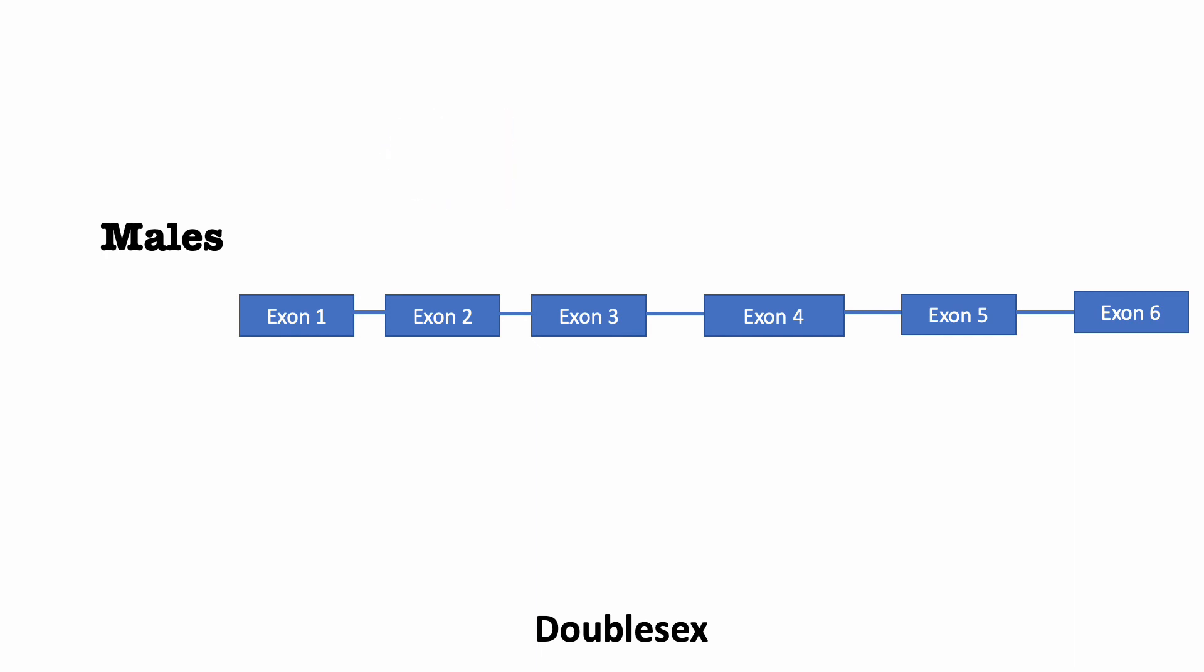For both sexes, the first three exons of double-sex are constitutively spliced, but for the males, the 3' splice site upstream of exon 4 is weak and not recognized by the splice machinery. This results in the exclusion of exon 4 and splicing together of exon 3 and exon 5, with polyadenylation taking place after exon 6.